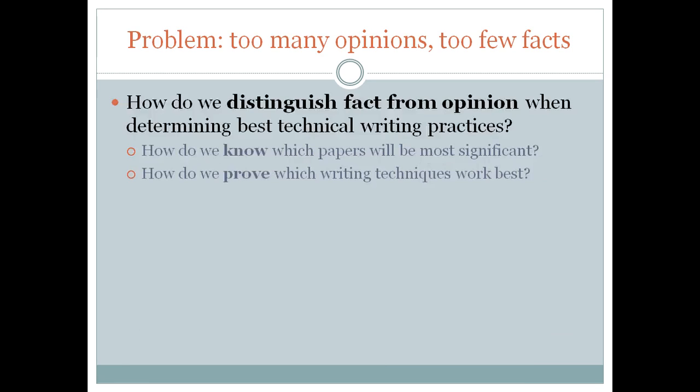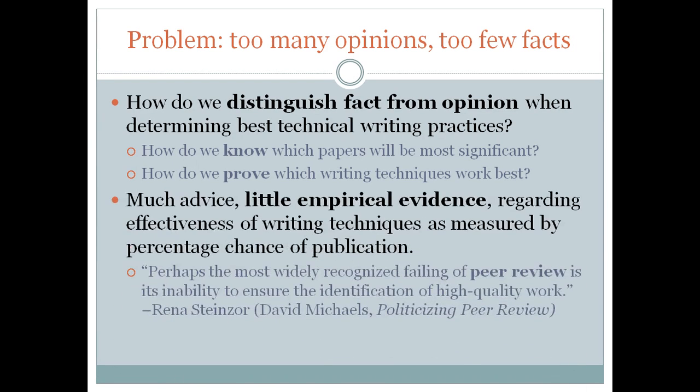How do we know which papers are the most significant? How do we know which writing techniques work best? These types of things are difficult to determine because there is very little empirical evidence. We know which papers have been published, but we don't have a lot of information on which papers have not been published. In fact, some scholars have lamented that the entire peer review process is political and does not guarantee the identification of high quality work.